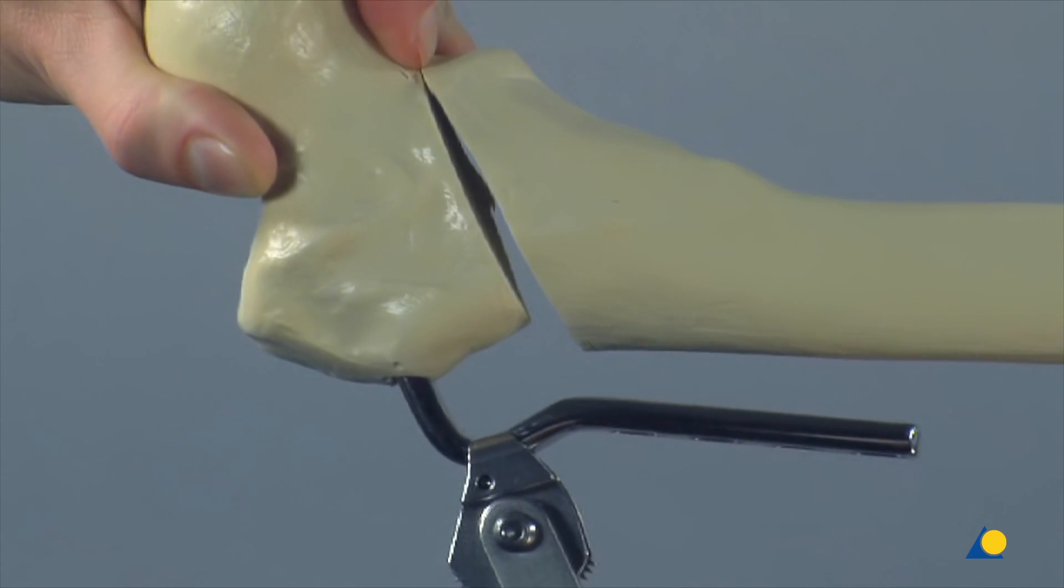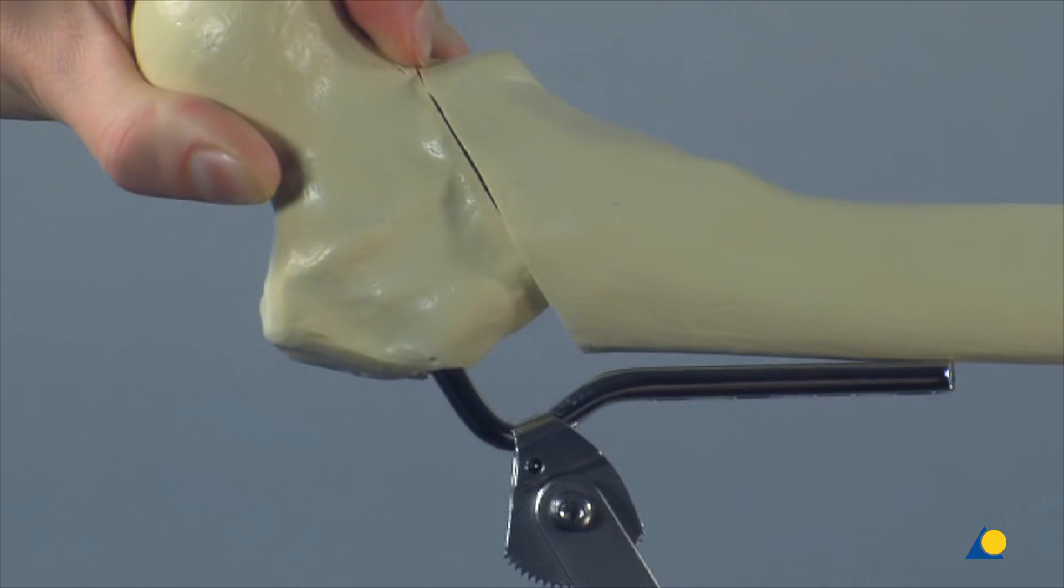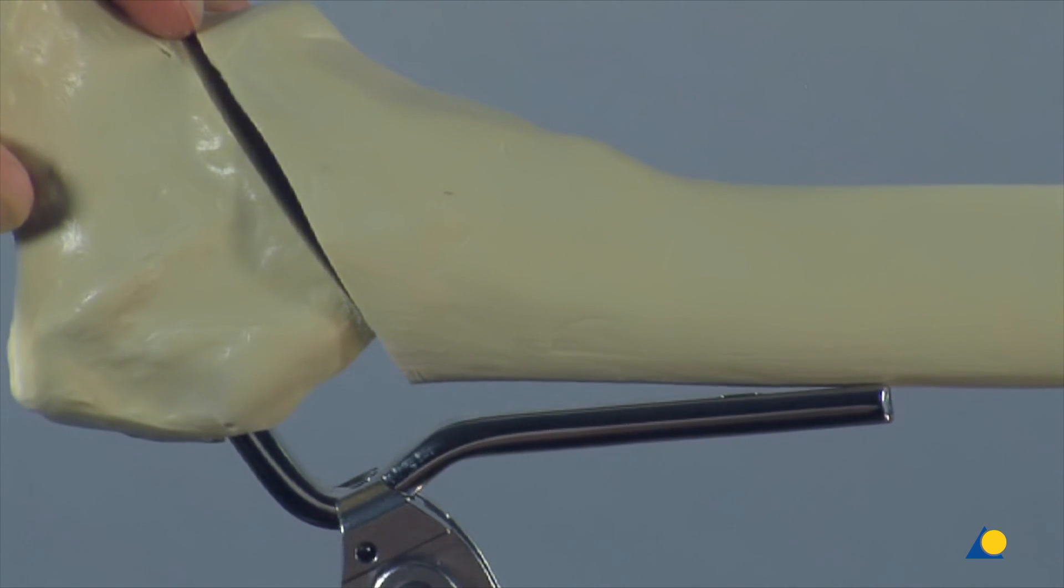The two oblique osteotomy surfaces are brought together, leaving a 3 to 5 millimetre gap between the lateral cortex and the plate at the distal osteotomy cut.